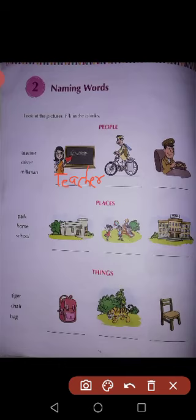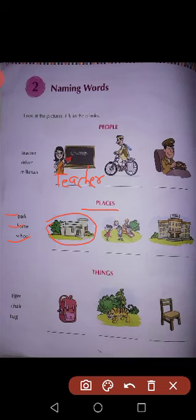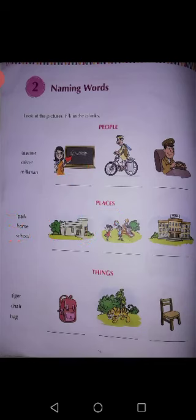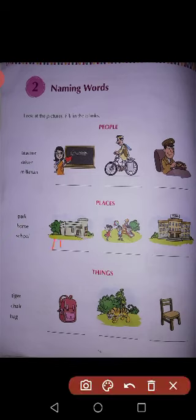Okay, now next — places, jagah. Yahan par jo jagah hai jaise park hai, home hai aur school hai, to inme se kaun sa school hai, kaun sa park hai aur kaun sa home hai, usko fill karna hai. To yeh kya hai? Home hai, to hum yahan par home fill kar denge.